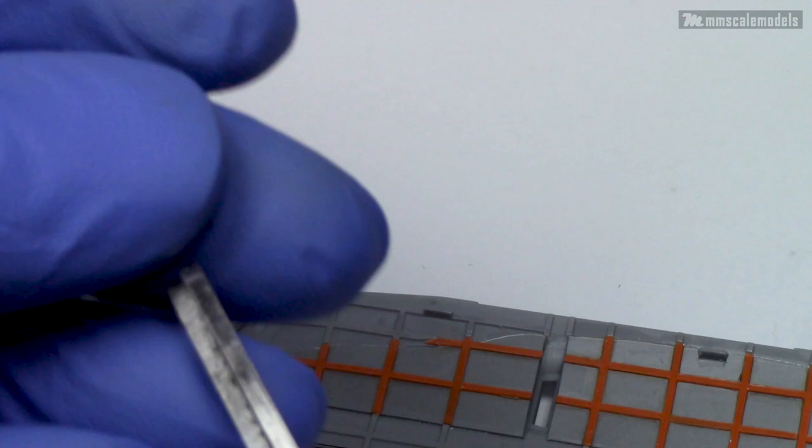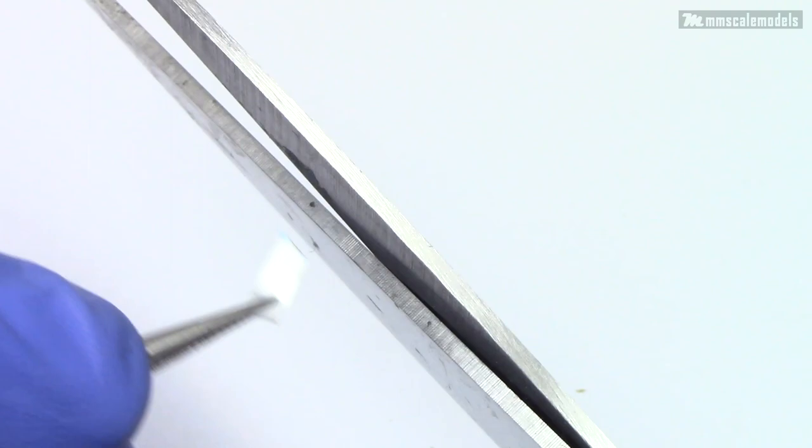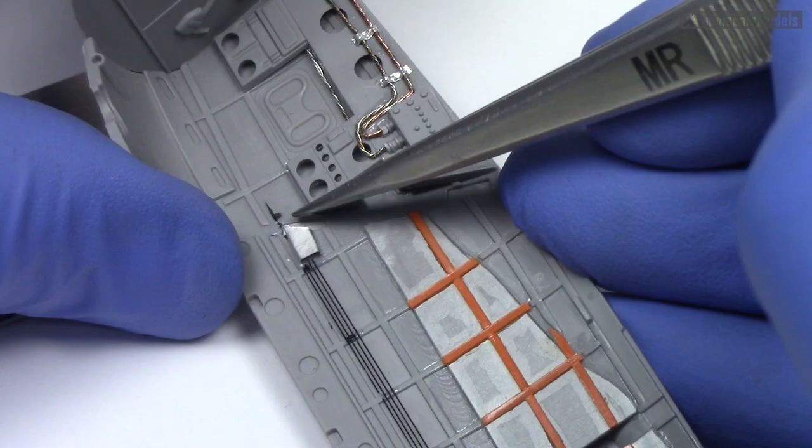Since I don't want the control cables to end so abruptly at the bulkheads, I made some covers from thin metal sheets. These covers should give the impression that the control cables go through the bulkheads and not just end there.